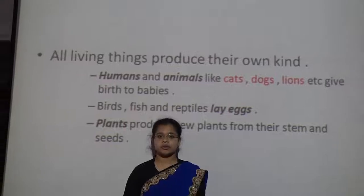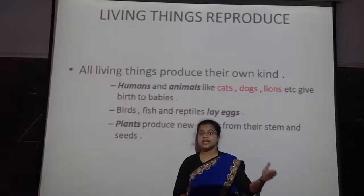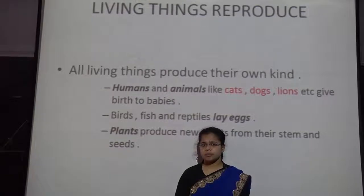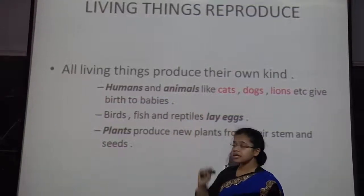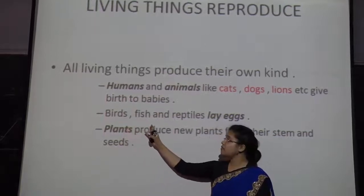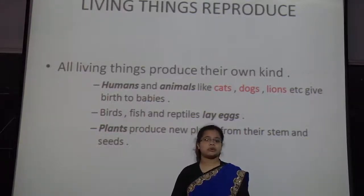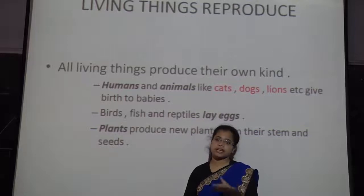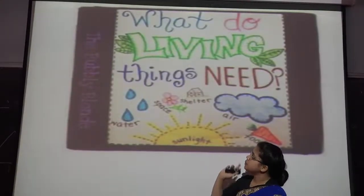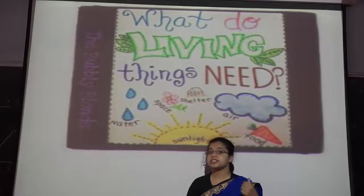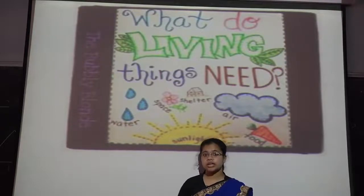Living things reproduce. All living things reproduce — either they give birth to their young ones or they lay eggs. Animals like dogs, cats, and human beings give birth to their babies, but birds, fish, and reptiles lay eggs. Plants reproduce through different parts of their bodies, like seeds or stems. Living things need air, food, shelter, and water to stay alive.